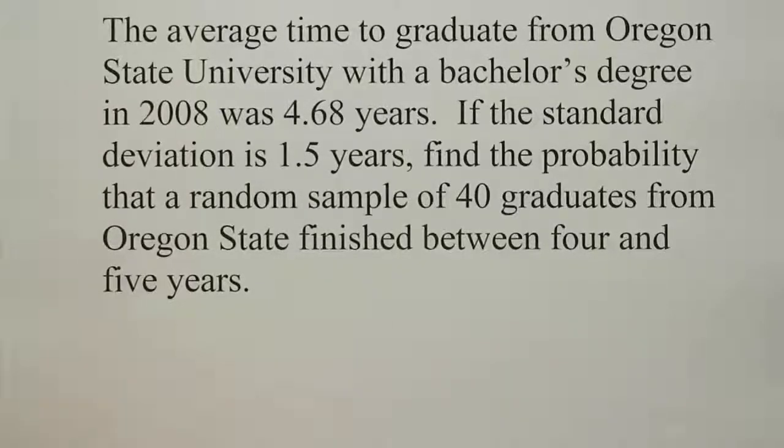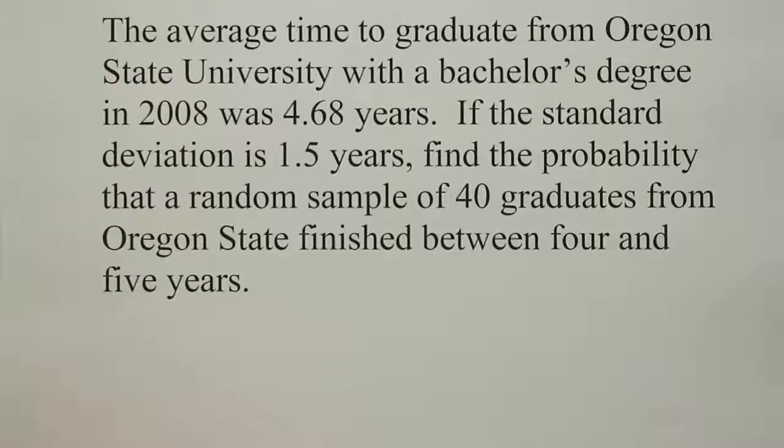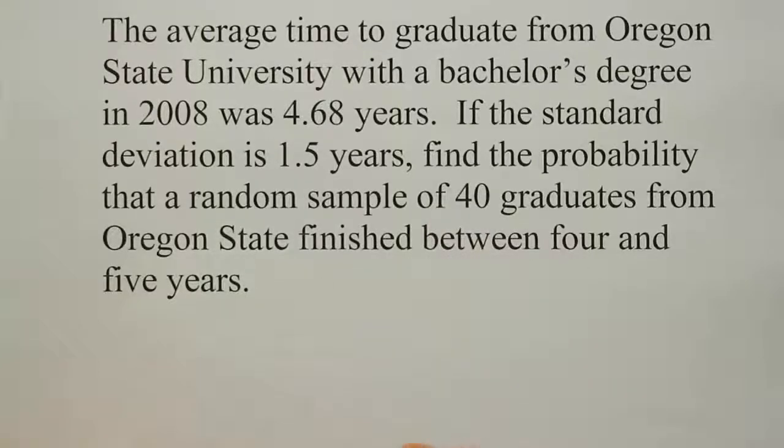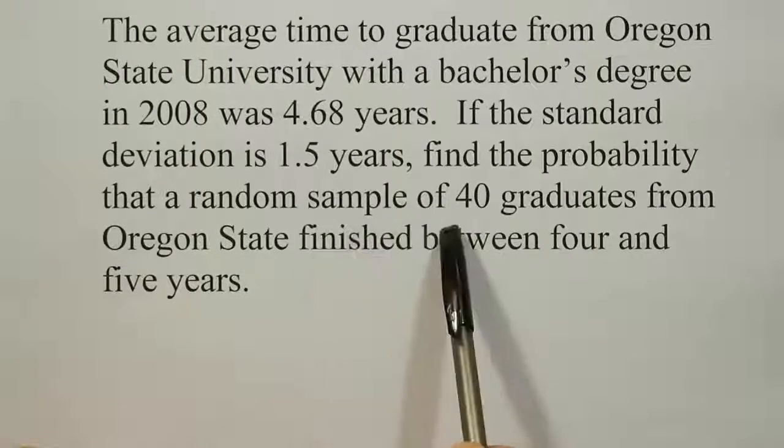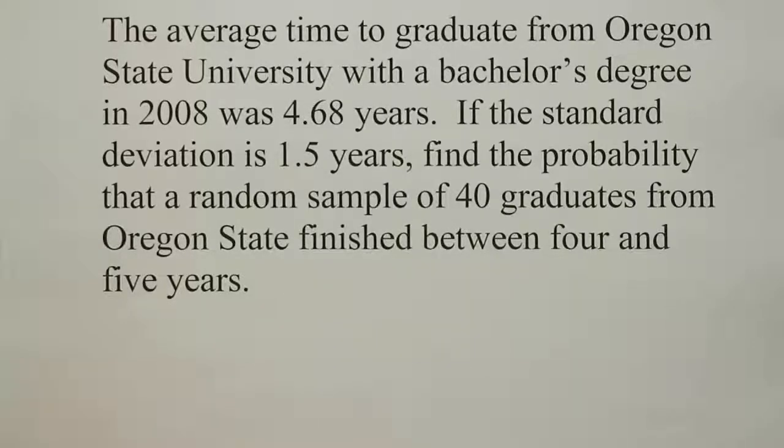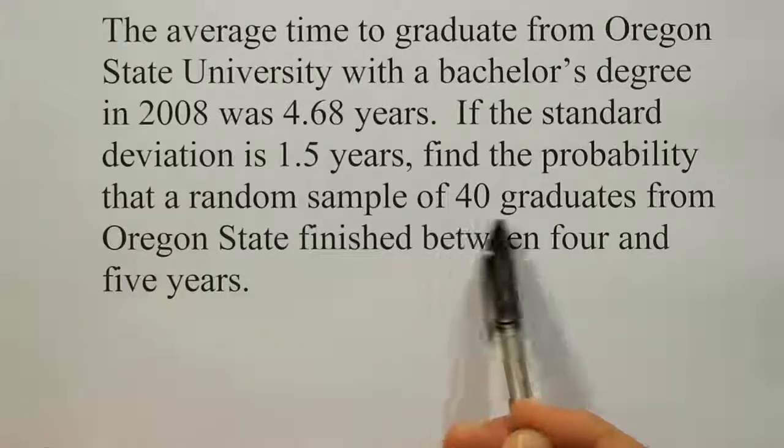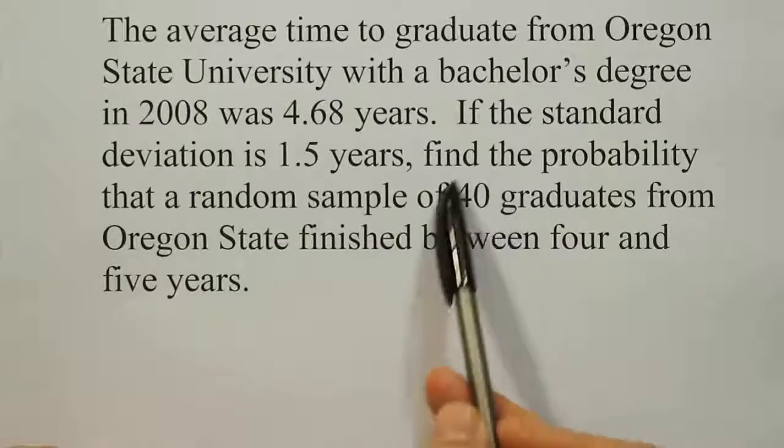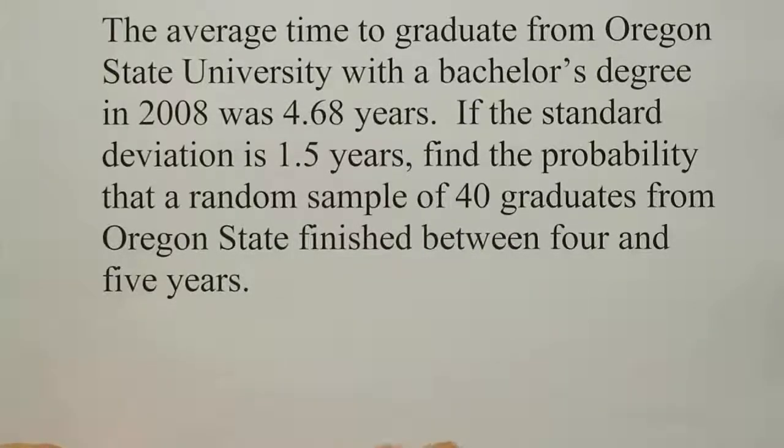This is a very important question here. The idea in this problem is that we're trying to find the probability that a random sample of 40 graduates finished between four and five years. Even though they didn't say it, they were talking about the average time for them to finish, because each person would finish in an individual length of time. So we're looking for the average length of time for them to finish to be between four and five years. If it doesn't say that, we wouldn't be justified in doing what we're about to do.